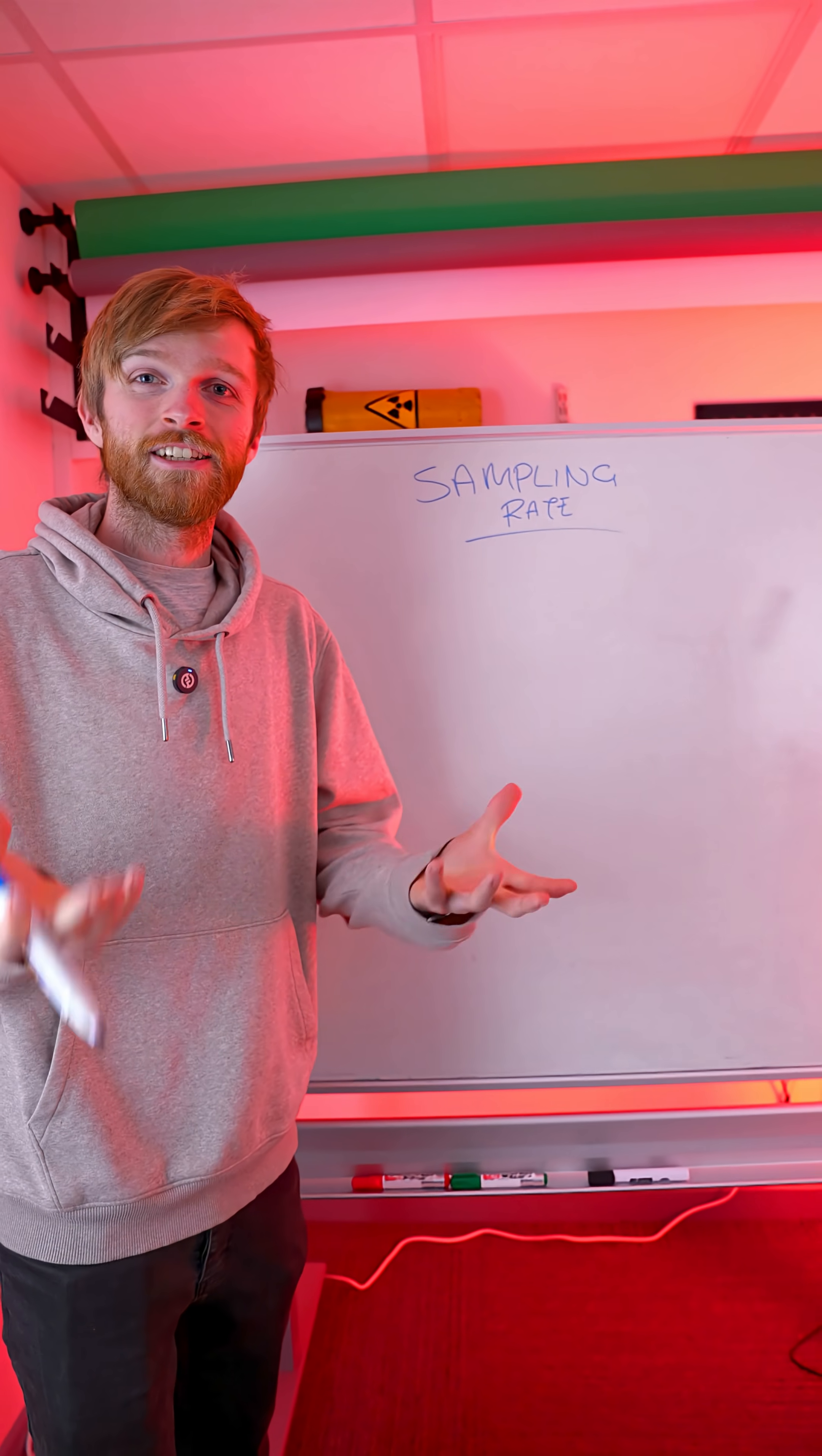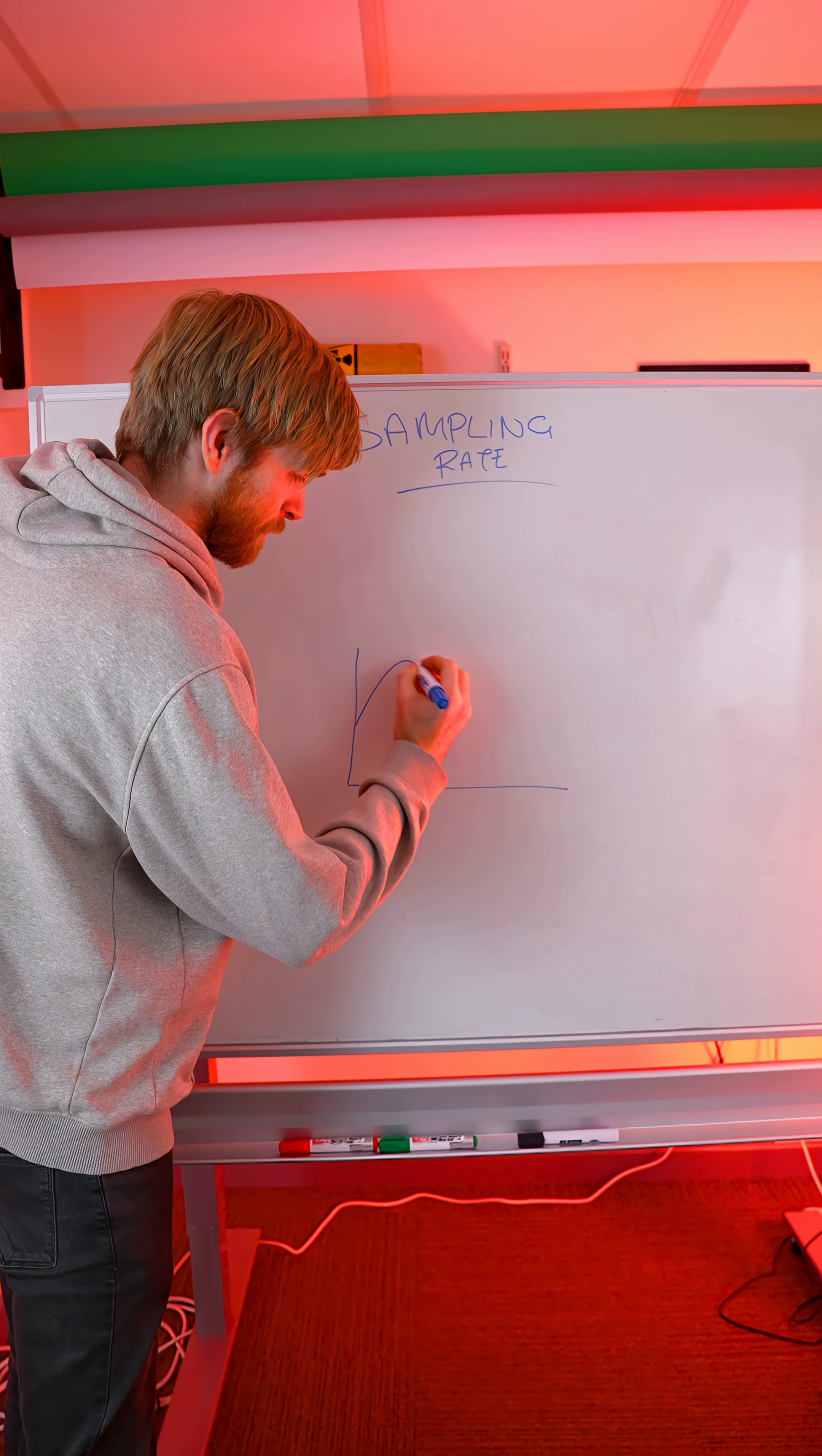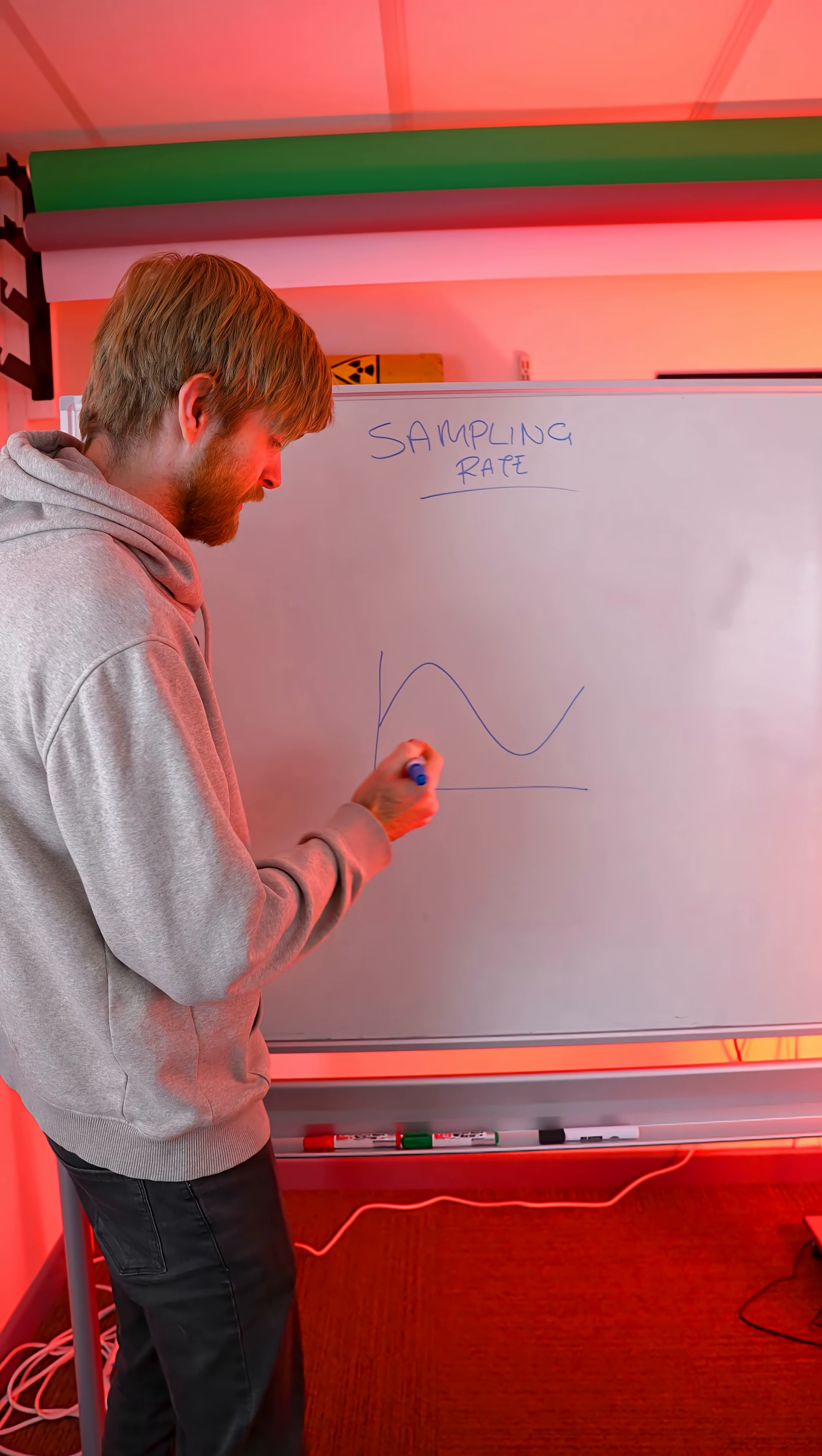So sample rate is how a digital oscilloscope collects data. The analog signal that goes into an oscilloscope will look something like this. But a digital oscilloscope will take points of that data and then plot it to the screen, so you can see it.